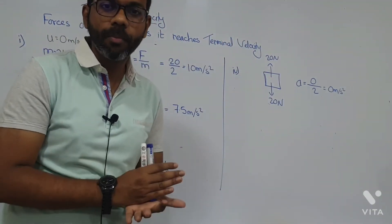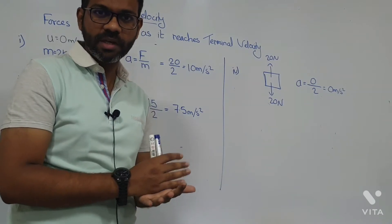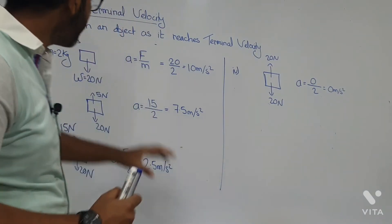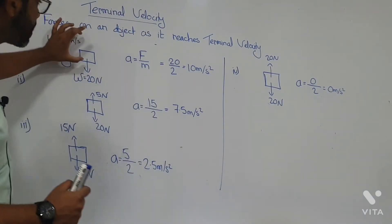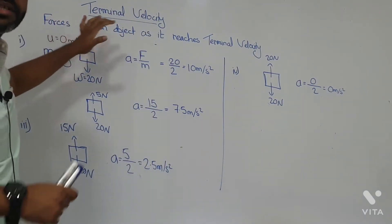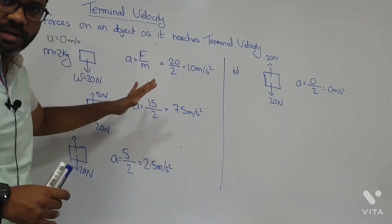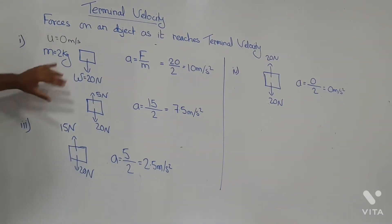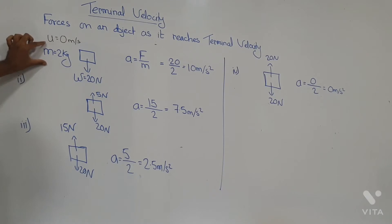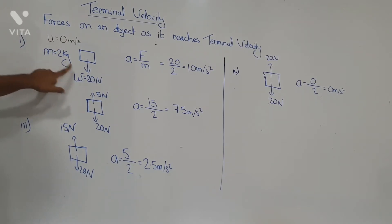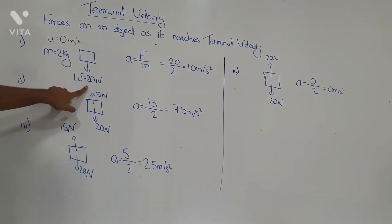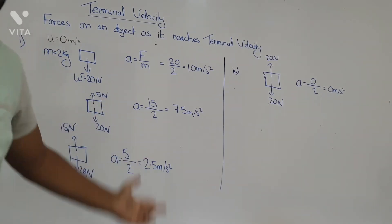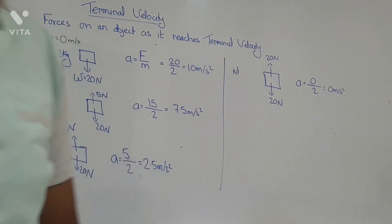There has to be an opposing force on it. So we are assuming this object is falling in the presence of air and there is a significant air resistance acting on it. Let's assume we have an object of mass 2 kg — its weight is 20 Newtons.